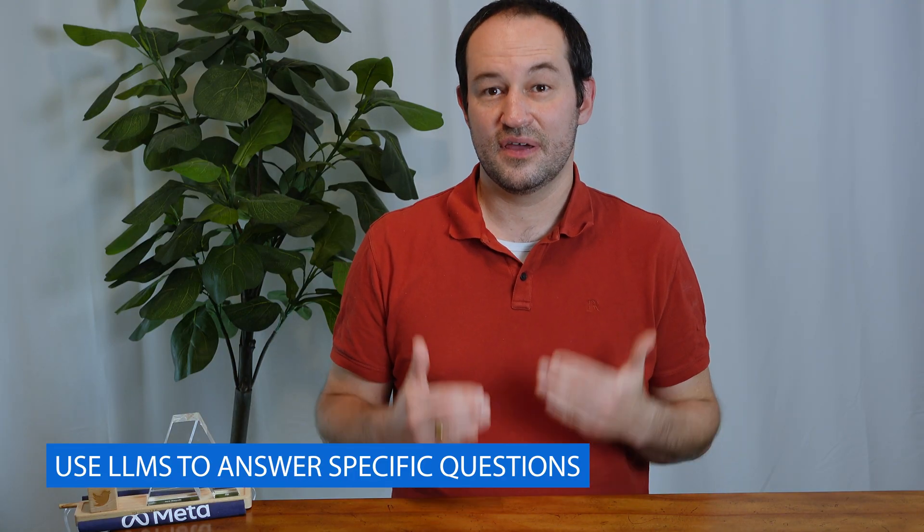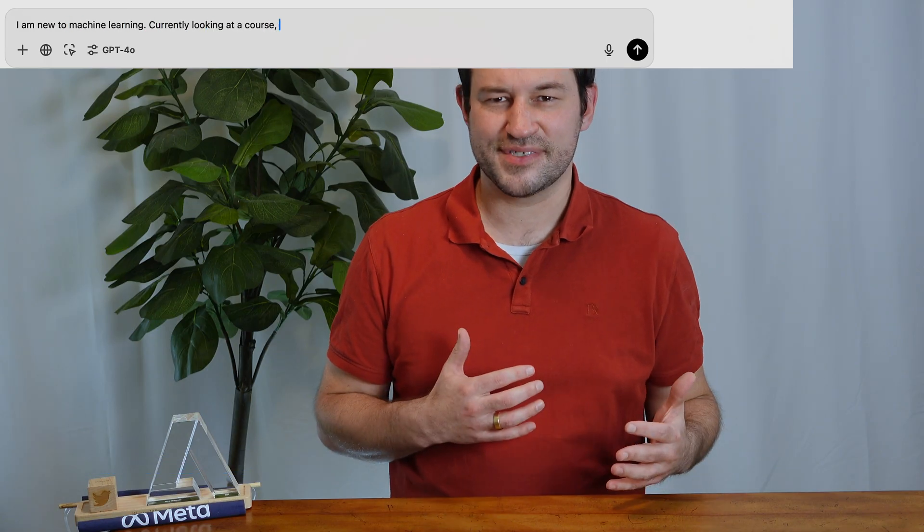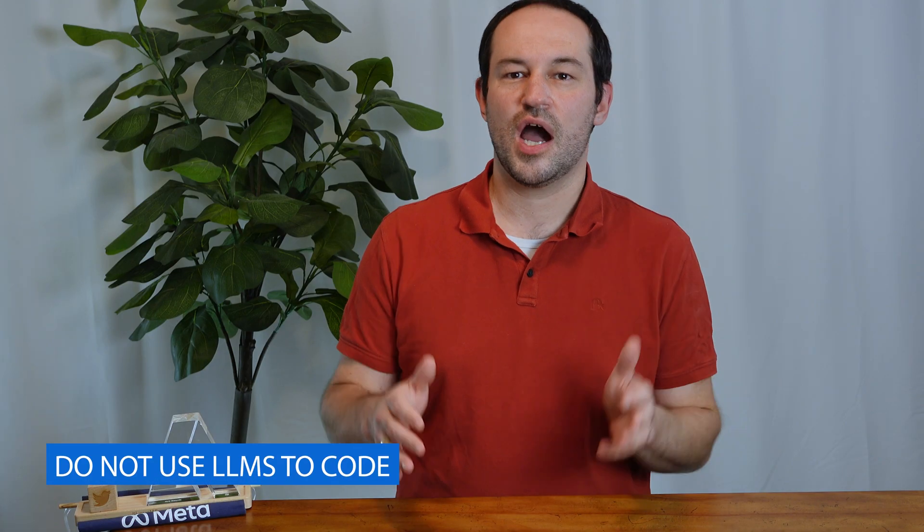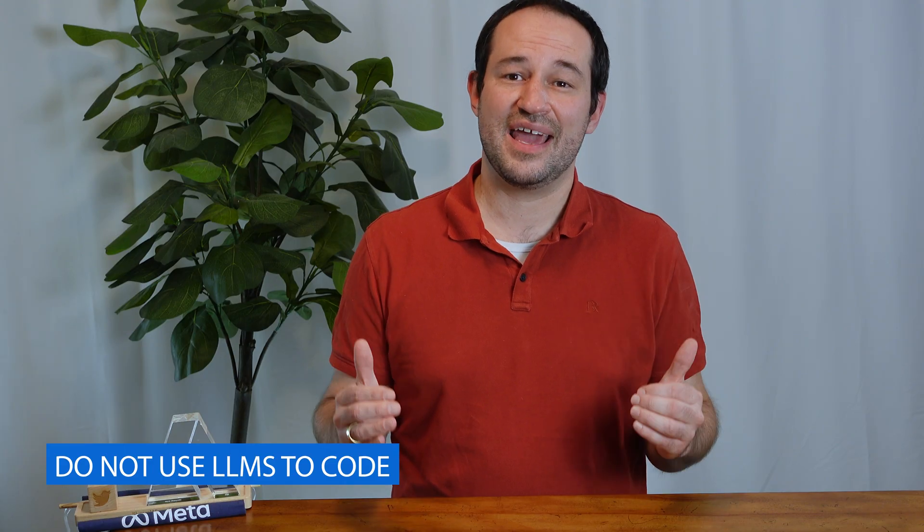And this is where ChatGPT and similar tools come to help you. I recommend using these tools to ask specific questions. For example, what is a holdout set? Why is it important? These tools are incredible at answering these questions. But do not, no matter what you do, copy code that they produce. I find that for a beginner, finding bugs in the AI code is very, very difficult.